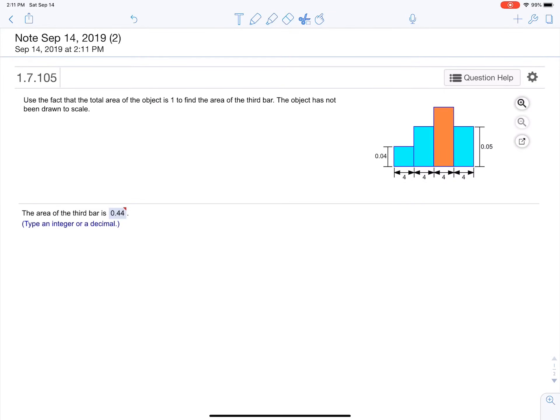Okay, so we're trying to find the area of something. It says use the fact that the total area of the object is one to find the area of the third bar.